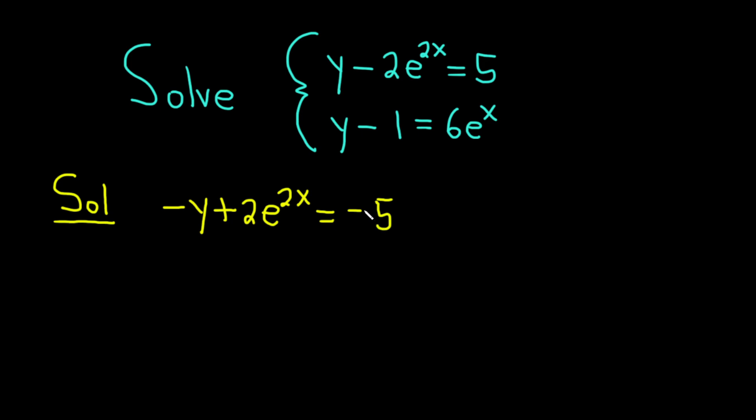So all we've done so far is we've multiplied this first equation by negative 1. Let's go ahead and write the second equation right below it. So we have y minus 1, and that's equal to 6e to the x. And so now we can eliminate the y by basically adding these two equations. So if we add, we end up with the following. Negative y plus y is 0, so I won't write it. That goes away.